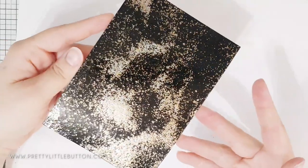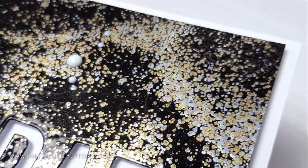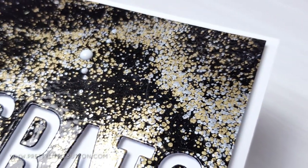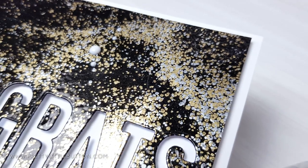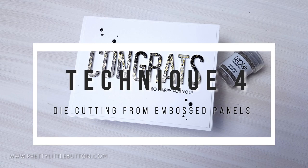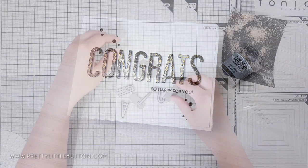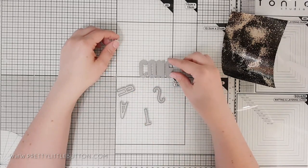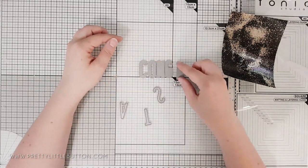The last technique for today is showing you that once you've created an embossed panel like we did in technique three, you can then die cut from those panels. So this is great when you've got smaller dies which would probably be a bit too fiddly to try and emboss like we did in technique one, but you still want that color blend look to your die cuts.